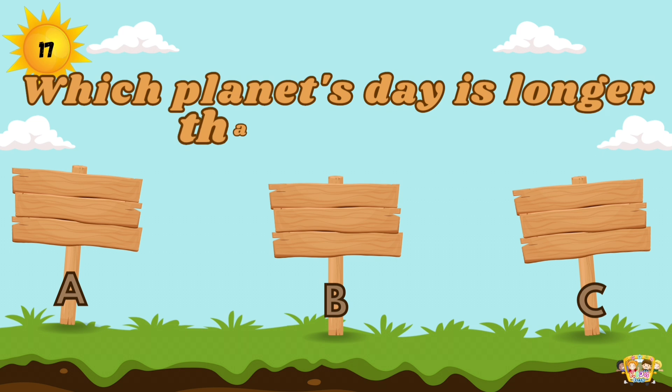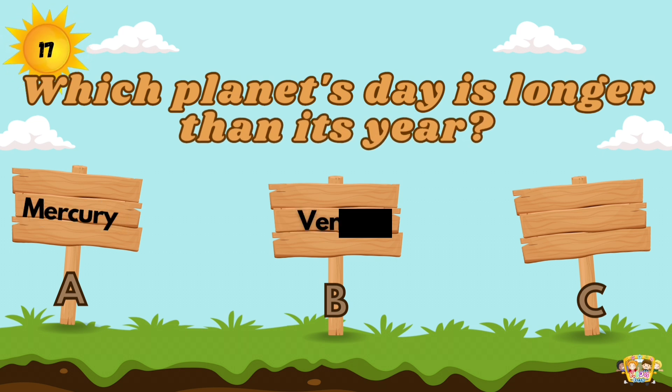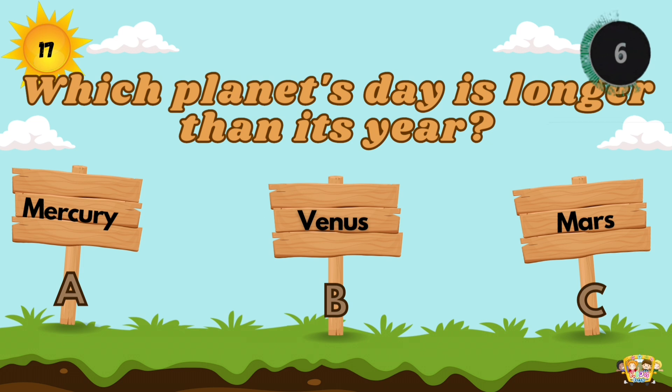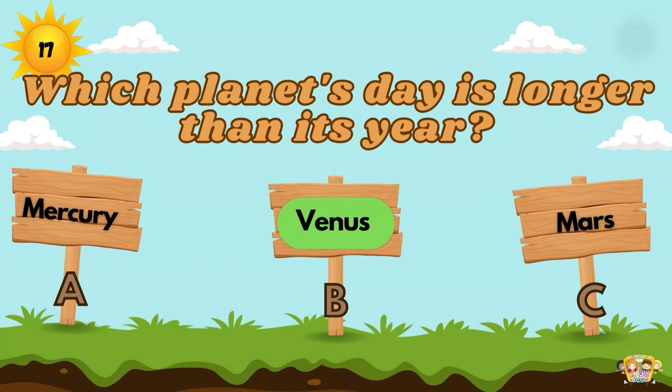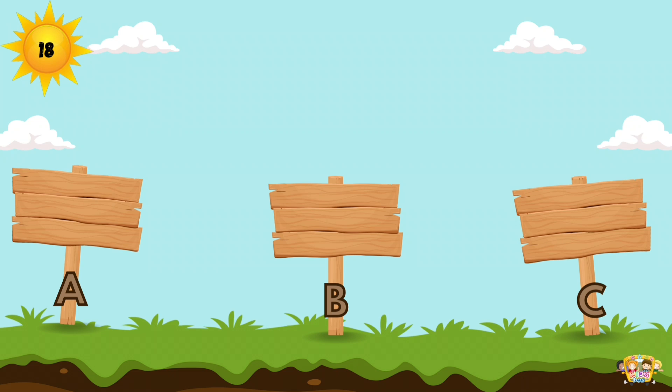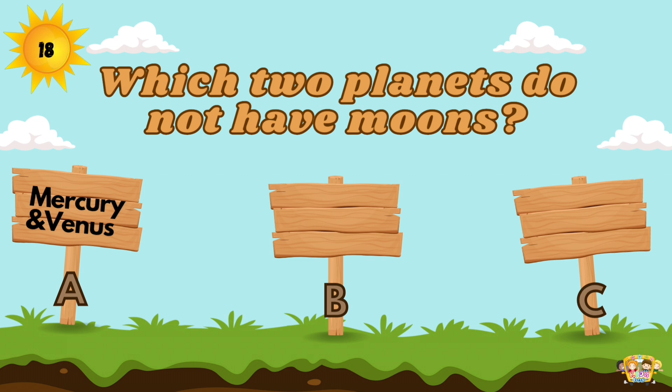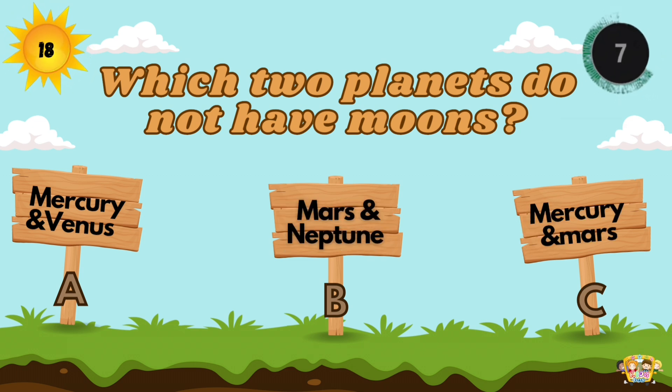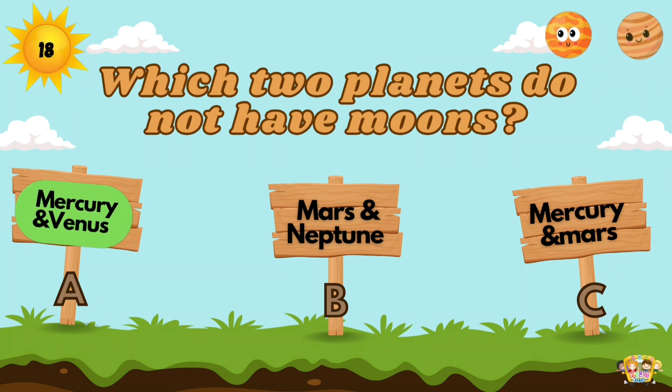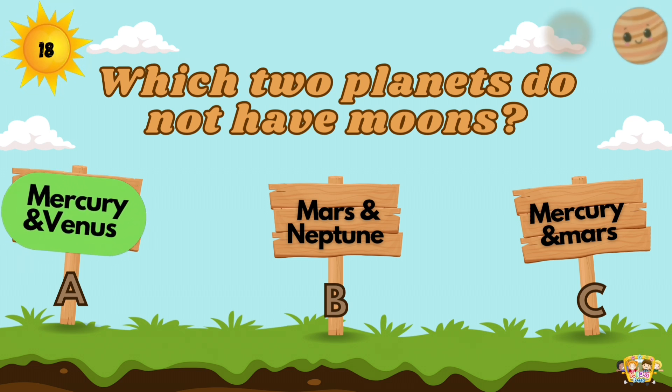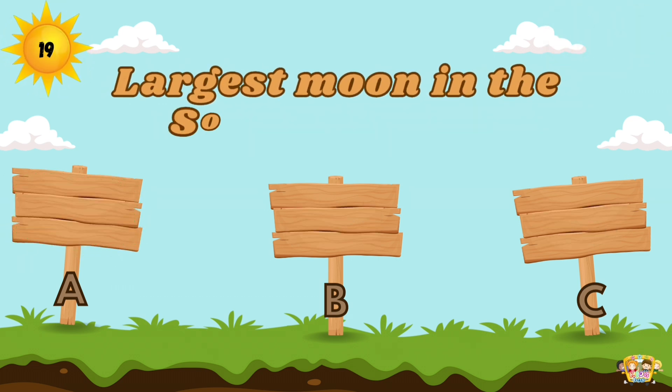Which planet's day is longer than its year? A day on Venus is longer than a year. Which two planets do not have moons? Mercury and Venus.